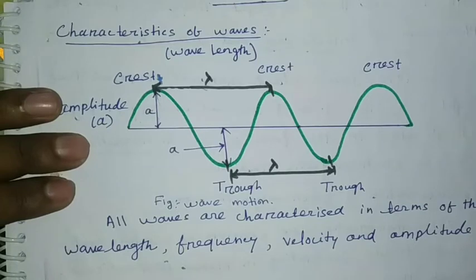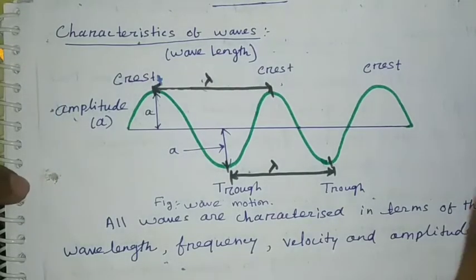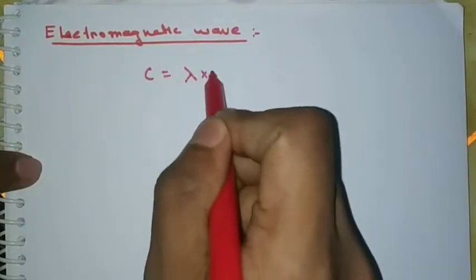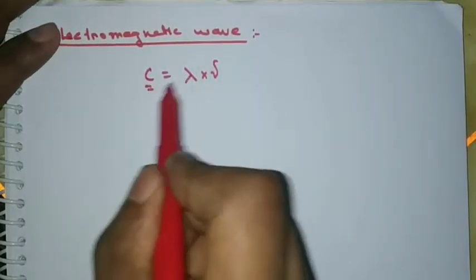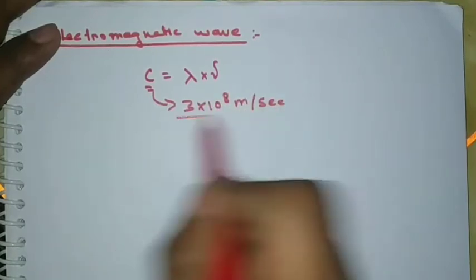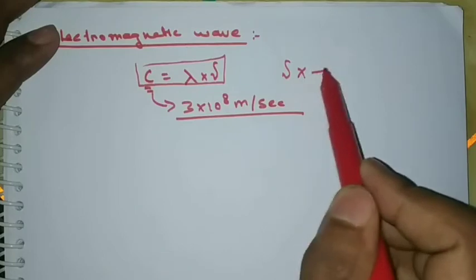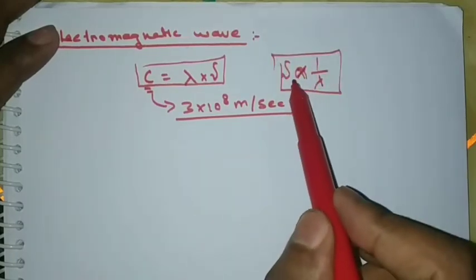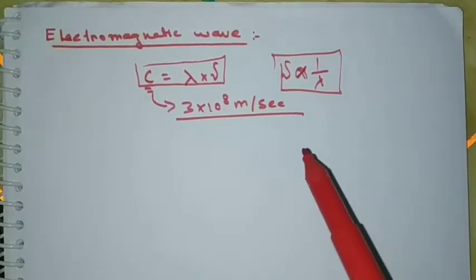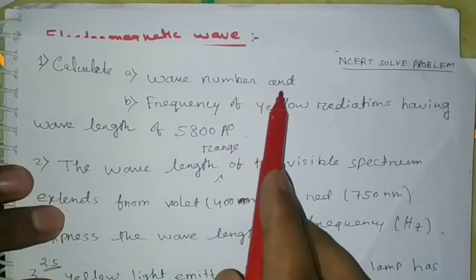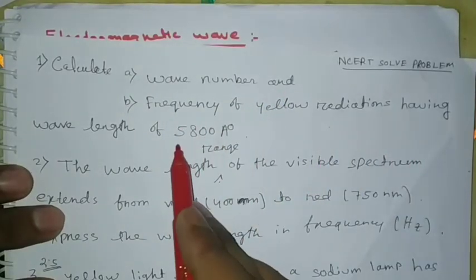The number of waves passing through a given point in one second is called frequency. The frequency is related to the wavelength. The first problem is to calculate the wave number and frequency of radiation having wavelength 5800 Å.